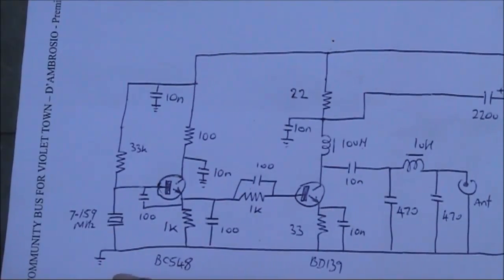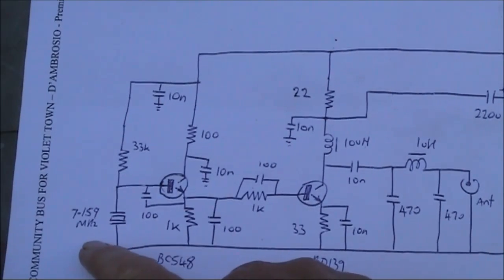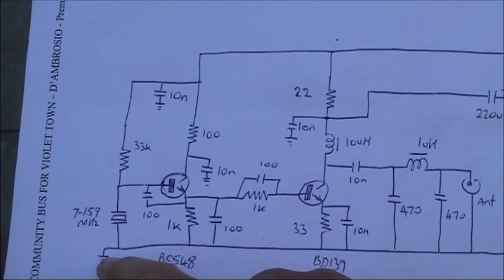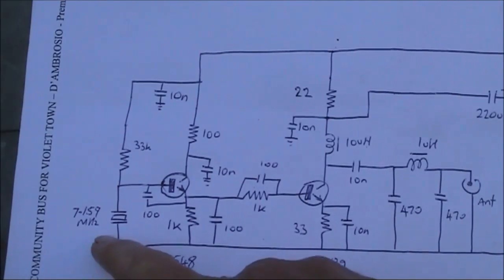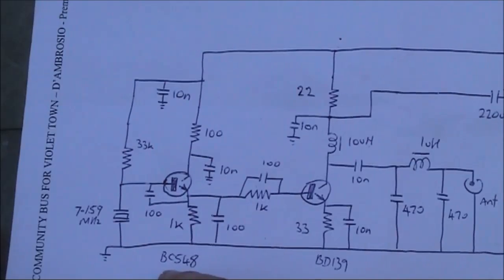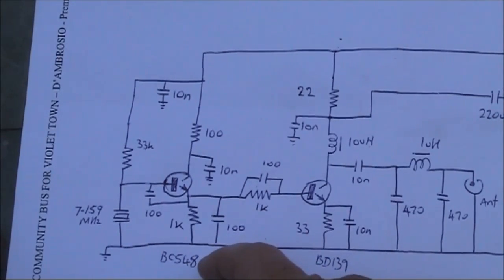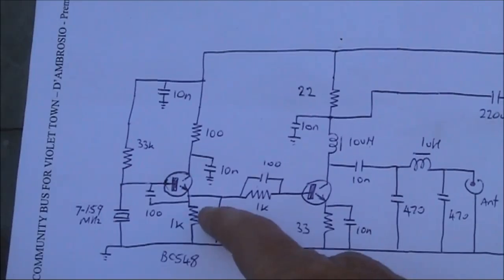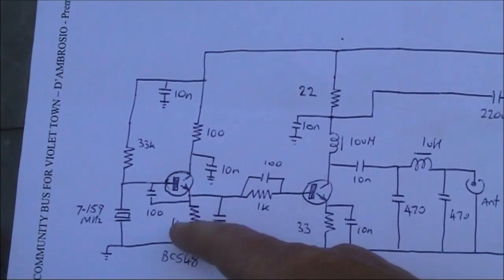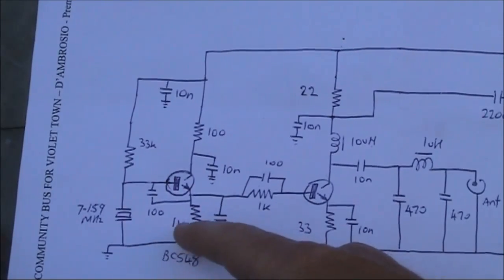Over here is the crystal oscillator using a 7.159 MHz crystal. You could easily substitute another one like for 3.5 MHz or even 1.8 MHz. The transistor for the oscillator — I used a BC548, but you could use anything similar like a 2N3904 or a 2N2222.